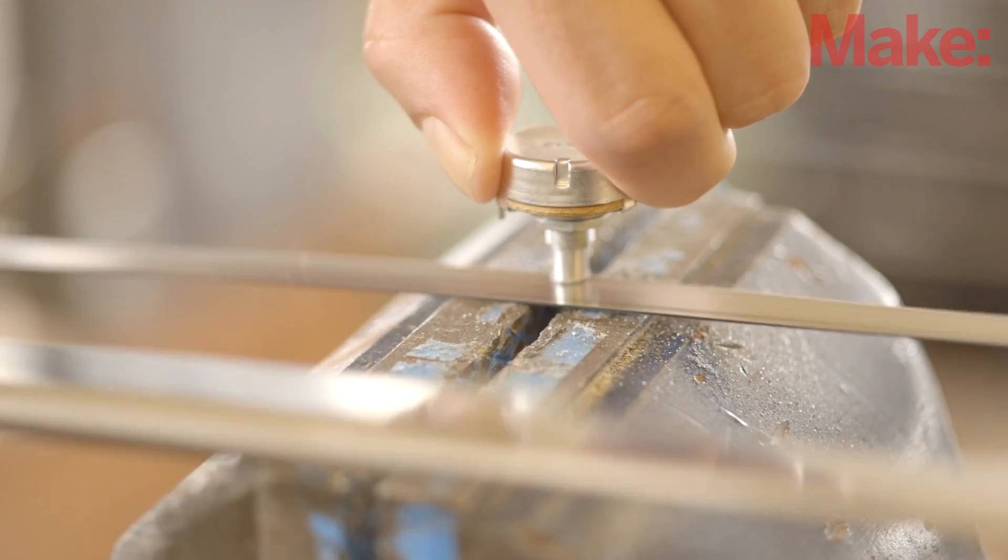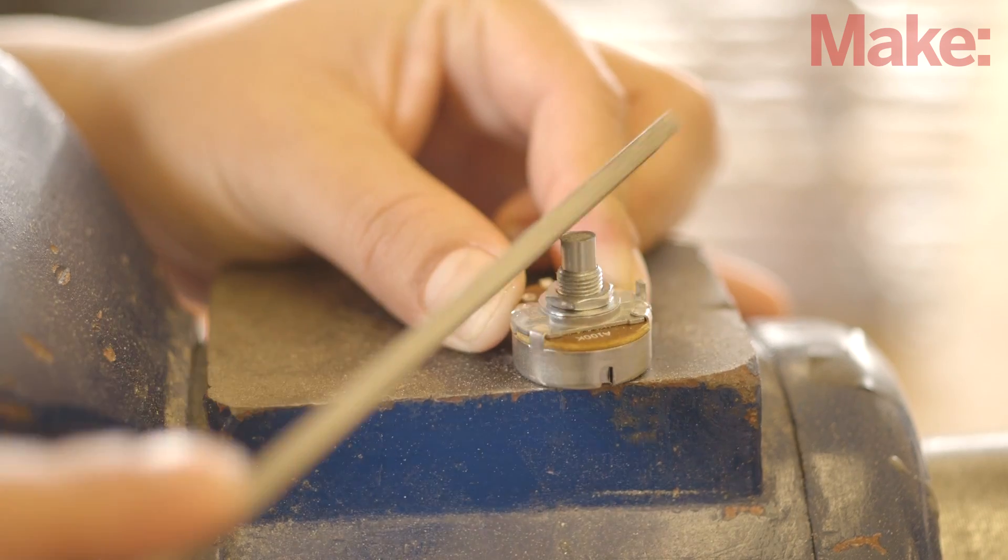We'll start by cutting down the potentiometer shaft. Use a hacksaw to make the cut, then a file to smooth the edges.